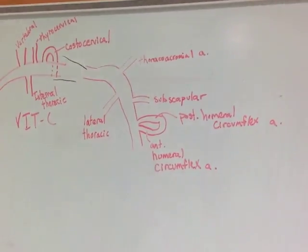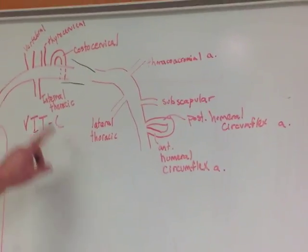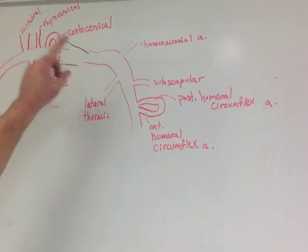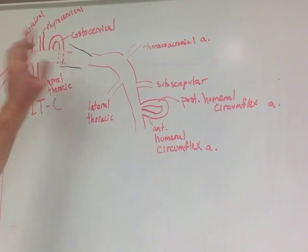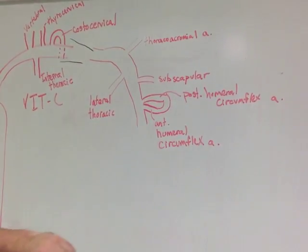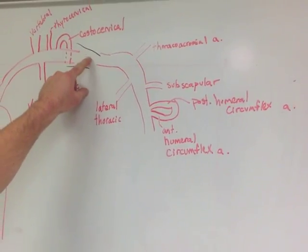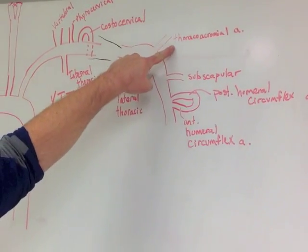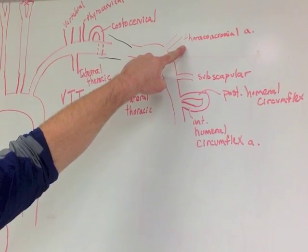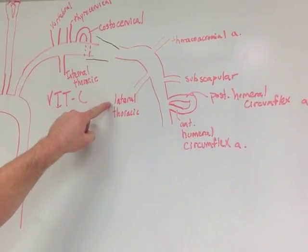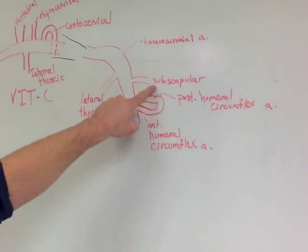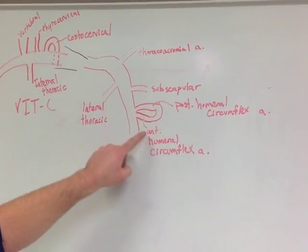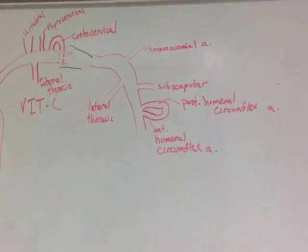So the mnemonic to help remember that is, as we're going from subclavian to axillary, we screw the lawyers and save a patient. So screw reminds us that we're getting to the end of the subclavian artery. The L is for thoracocromial, lawyers for lateral thoracic, save for subscapular, and then a patient is the anterior and posterior humeral circumflex arteries.